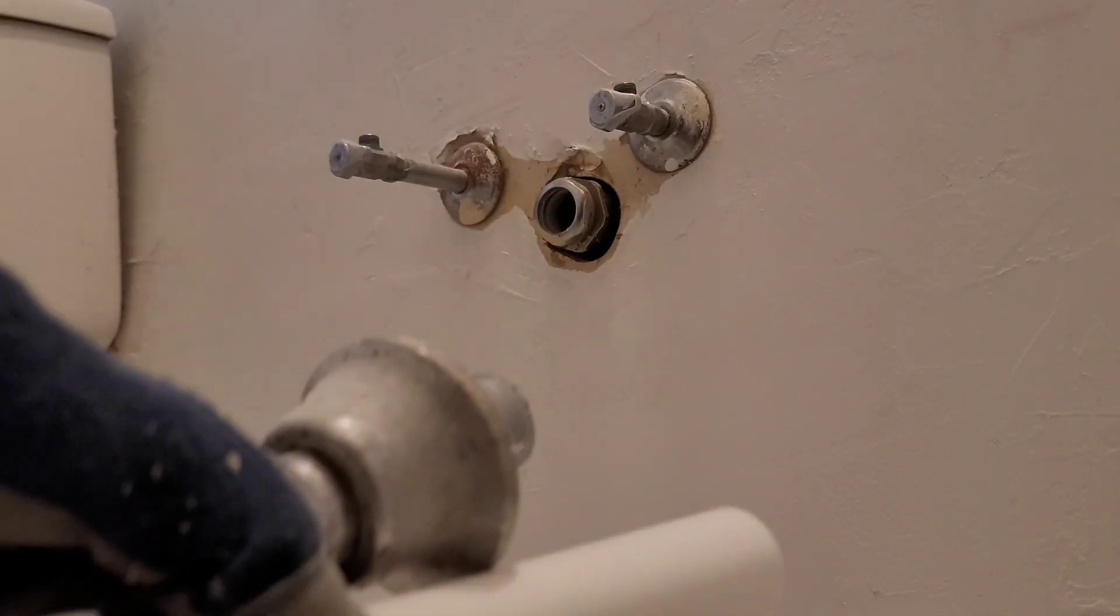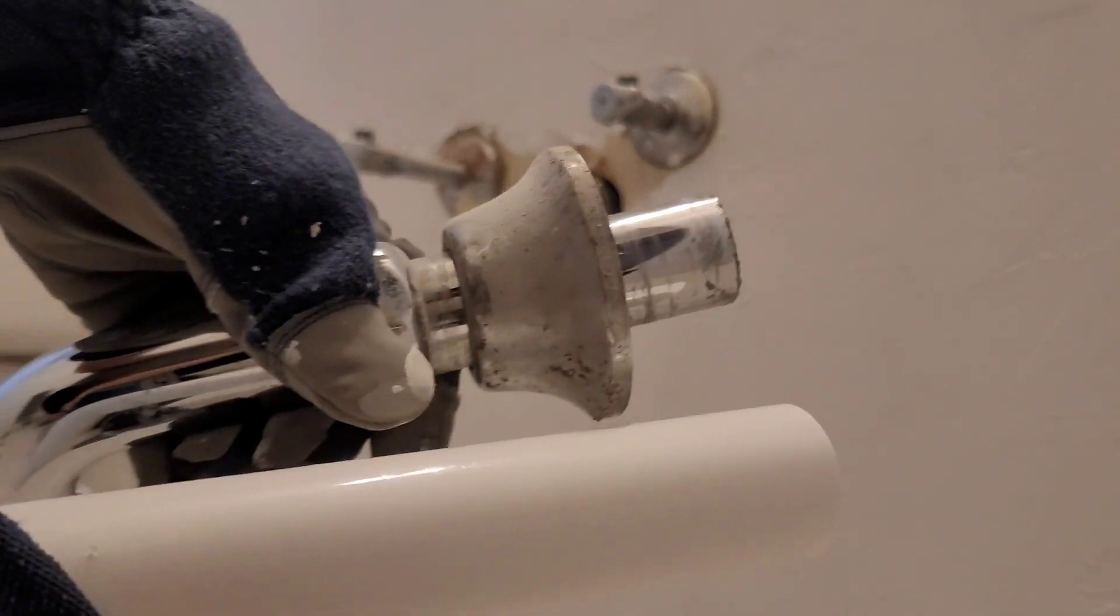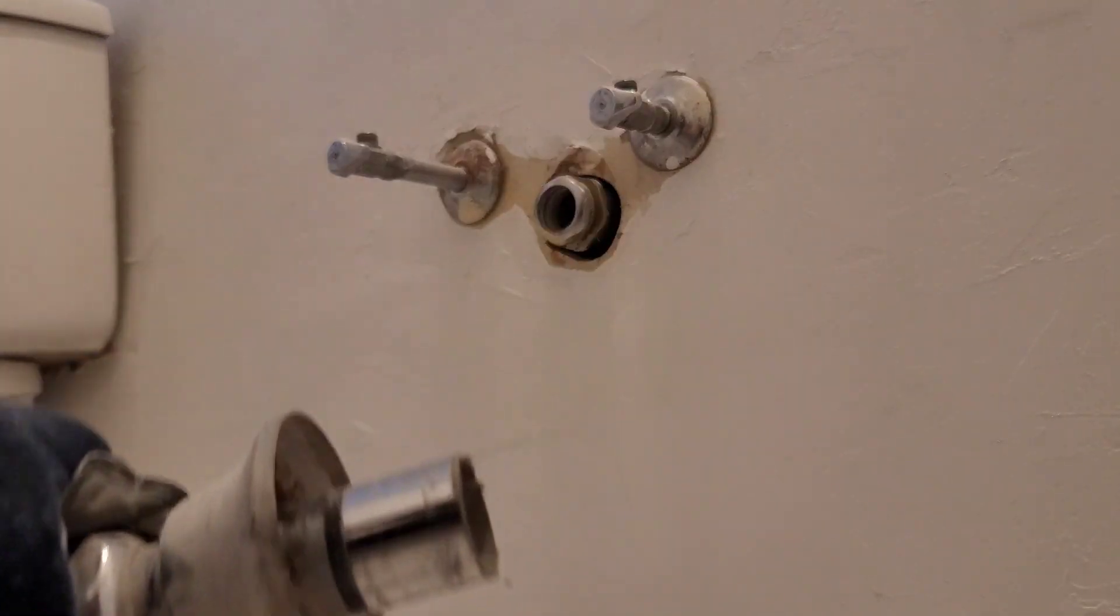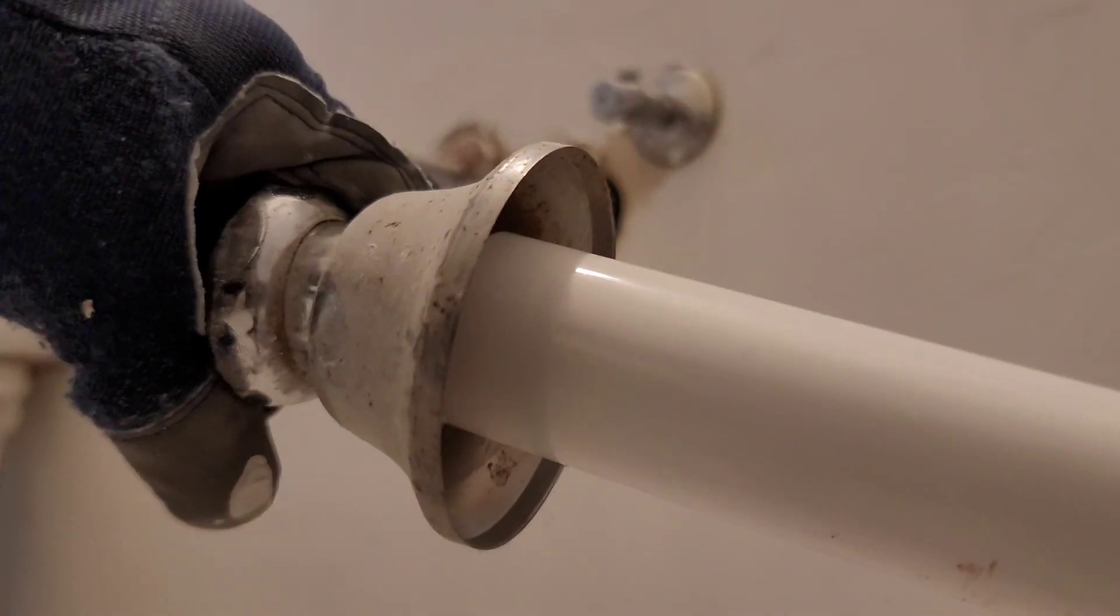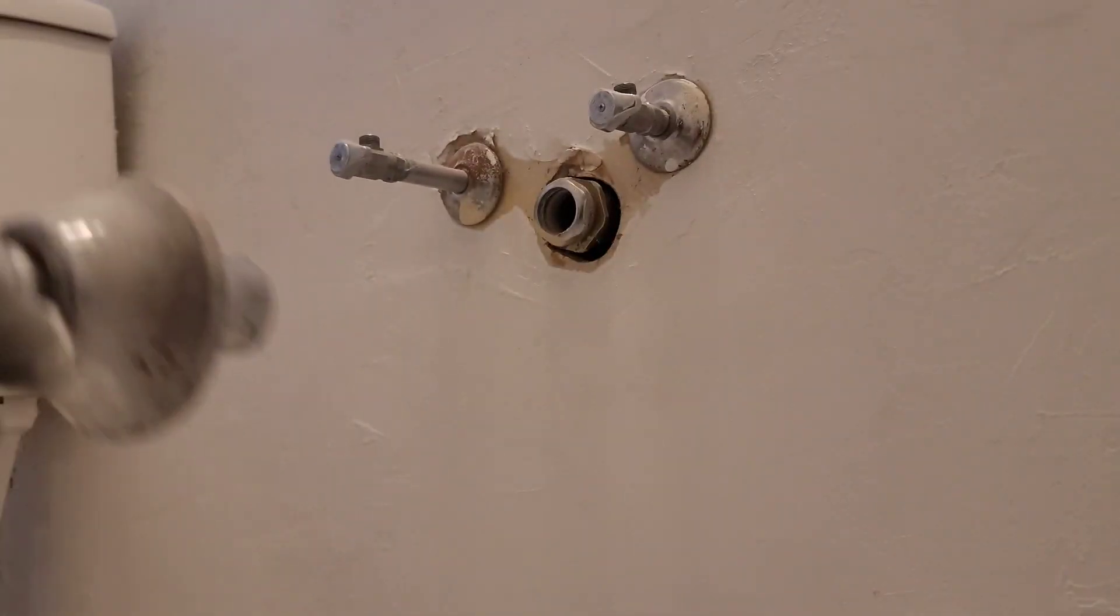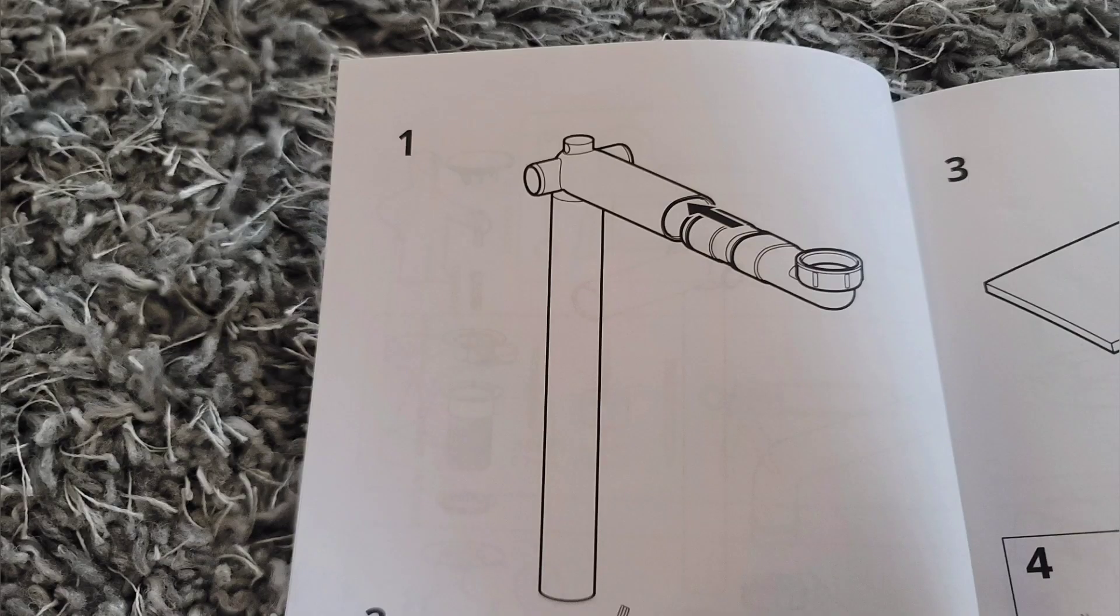I had to go out and measure my piping. So the original width is one inch, and then the one from Ikea is about one and a half. So later, I'll show you the sizing that I got to fix that.